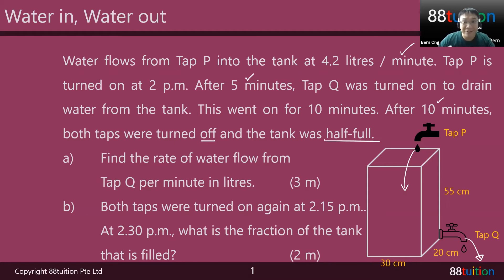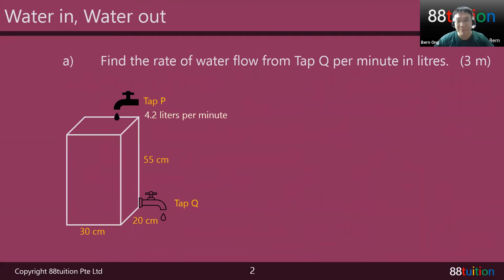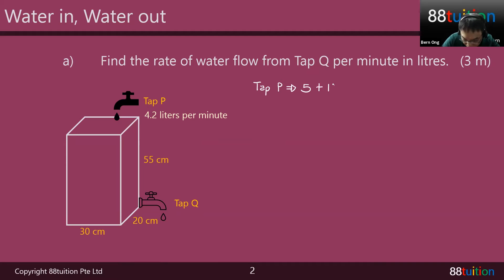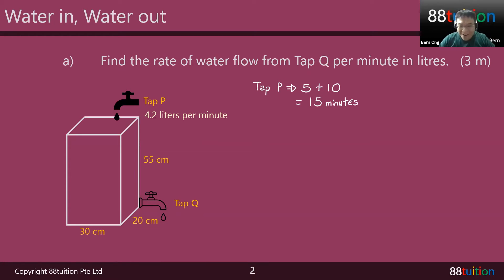Let's take a look at part A first — this is question 17. So you are supposed to find the rate of water flow from tap Q per minute in liters. Remember tap P? Tap P was turned on for the first 5 minutes alone, and after that another 10 minutes it continued to flow water in — so 15 minutes total on time. In 1 minute, 4.2 liters of water is going in. In 15 minutes, you simply take 15 times 4.2 liters.